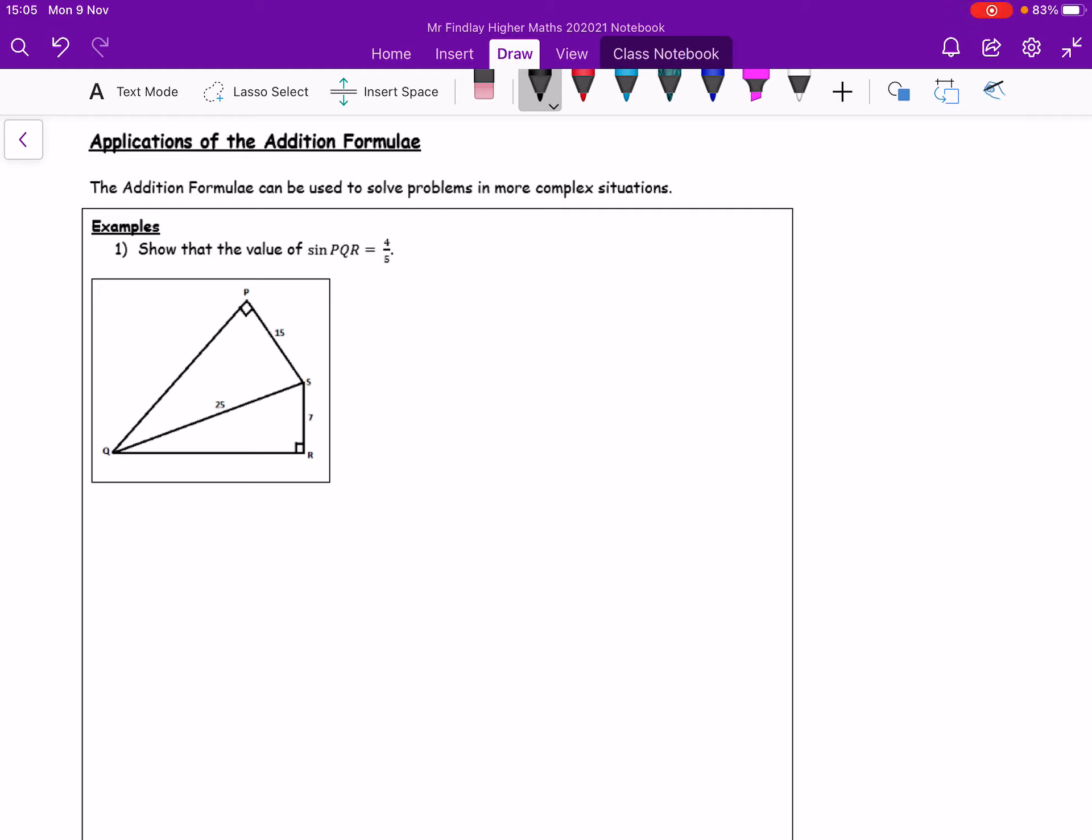Okay, fire pupils, the next part of our addition formula notes, and this time is the application. In this particular example, we are asked to show the value of sine PQR is equal to 4 over 5.